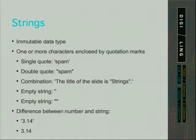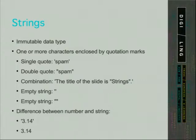The next data type we will cover is a string. Strings are immutable data types — they are a sequence of one or more characters enclosed by quotation marks. You can use single quotes or double quotes; however, the type of quote you start with must be used to end the string. You can also use a combination of both: if you open a string with a single quote, you can use double quotes as characters inside it, and vice versa.